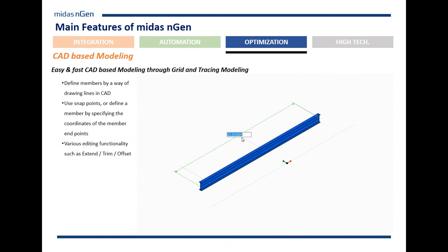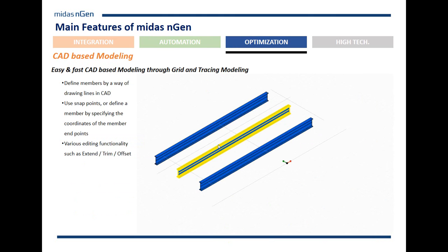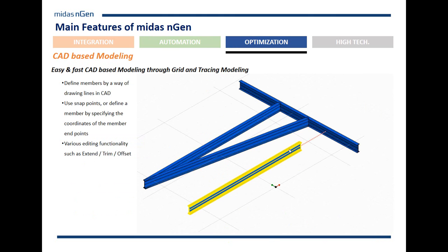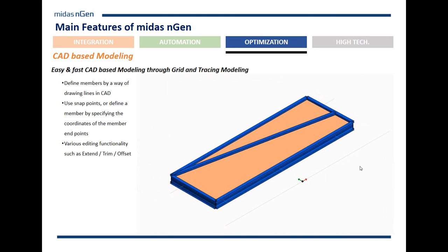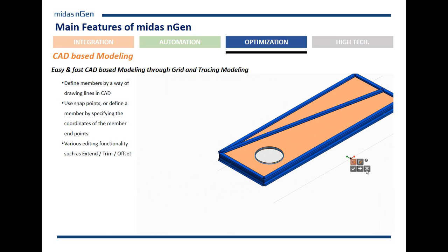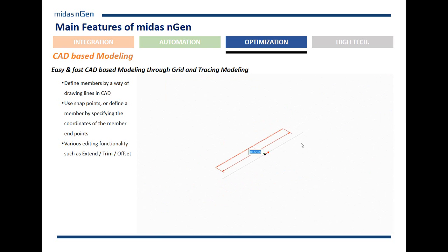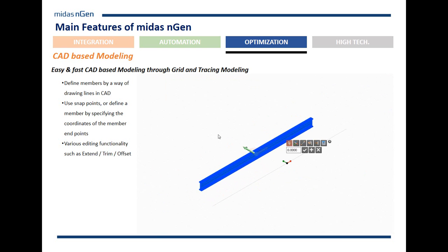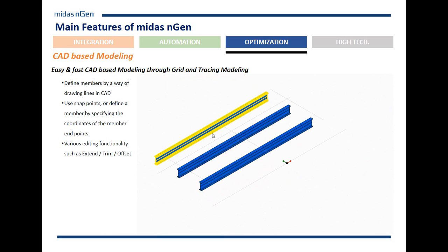The modeling within the program is CAD-based, so it's very easy to select a section and draw, edit, or make connections — all based on geometry. You can intersect, draw, divide, drag, and use commands like boolean operations and cut. Because it's based on geometry, it's very easy to edit, go back, and create any kind of structure.